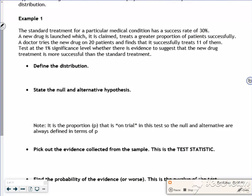So it says standard treatment for a particular medical condition has a success rate of 30%, so I know P is 0.3, because remember this is binomial. A new drug is launched which is claimed treats a greater proportion, so greater proportion, so I'm already thinking greater than. A doctor tries a new drug on 20 patients, so n is 20, and finds that it successfully treats 11 of them. So 11 of them is the test stat, the X bar that we had from the last one. I'll just put X is 11.